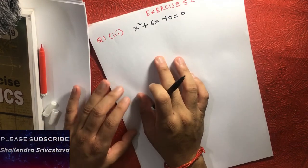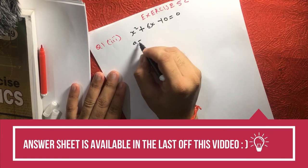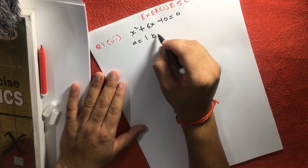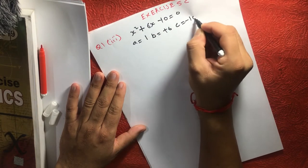For that, let's consider the values: a is equal to 1, b is equal to plus 6, and c is equal to minus 10.